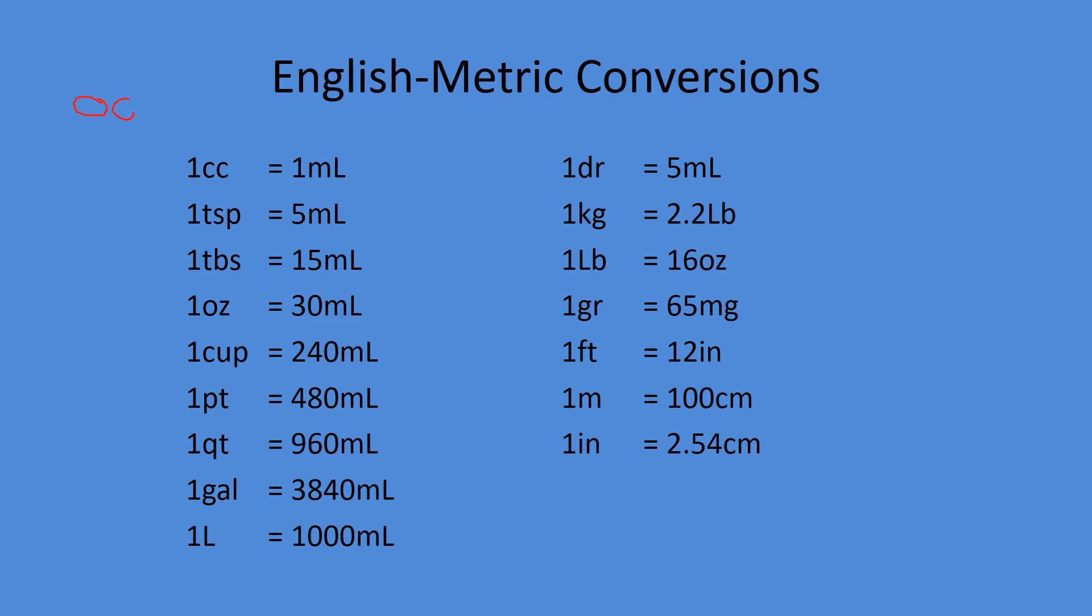What we have is 1 cc equals 1 ml. In pharmacy notation, we never want to use cc because they can be mistaken and look kind of like zeros, so that is not acceptable pharmacy notation. Anytime you see a cc, just automatically change it to lowercase m, uppercase L for milliliters. A small spoon, one teaspoon, is 5 ml. A large spoon, the tablespoon, is 15. An ounce is 30 ml, one cup 240, a pint 480, quart 960 ml, a gallon is 3840, and a liter is going to be a thousand milliliters.